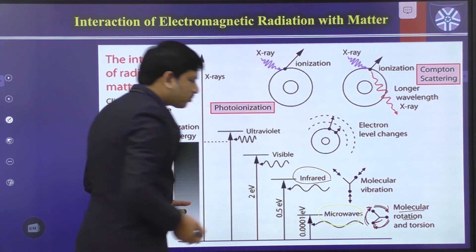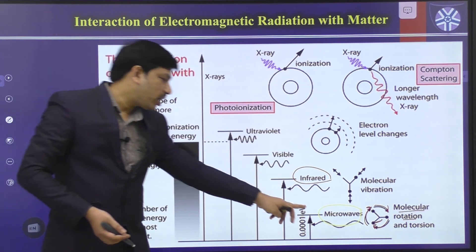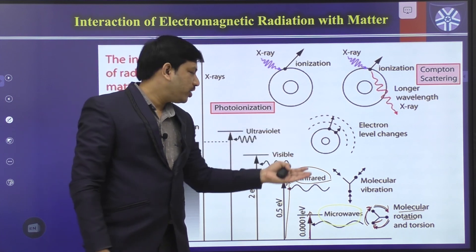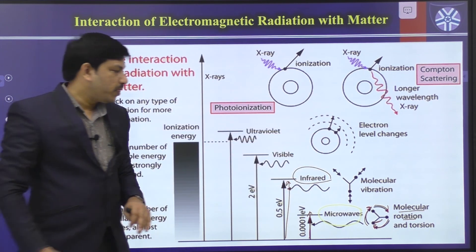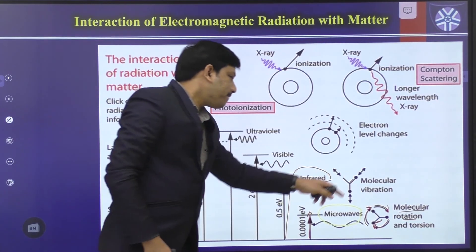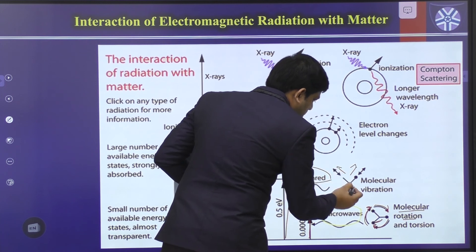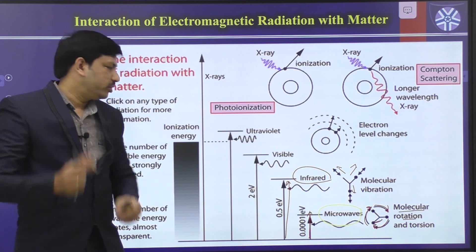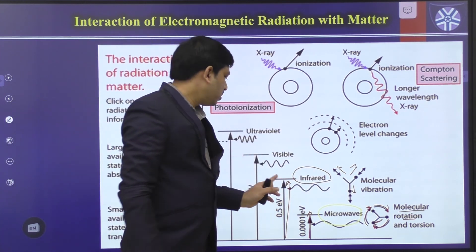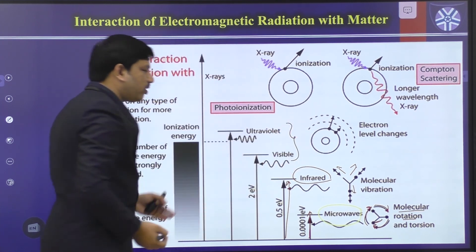Instead of microwave radiation, if we provide infrared radiation — which is slightly higher in energy — we can observe some bond vibrations. The molecule vibrates in different directions; bonds stretch and compress. So we observe molecular vibrations in a given molecule whenever infrared radiation interacts with it. The vibrational energy of the molecule changes.